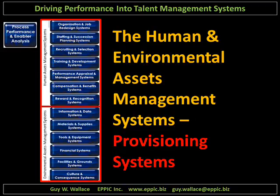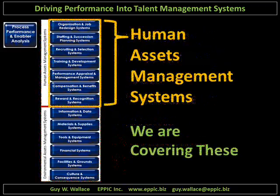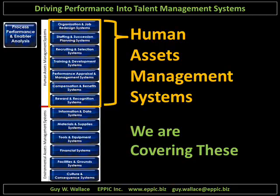Even though organizations won't look like this or be configured like this, this is my diagnostic tool to determine who and where does organizational job redesign happen, where does staffing and succession planning happen, recruiting and selection, etc. We are covering the human asset management systems and the requirements imposed on them by the process performance requirements themselves and their enablers. We study the processes and their enablers, and we look to the human asset management systems — named differently, configured differently — to determine whether or not we are provisioning these adequately to the needs of the process.